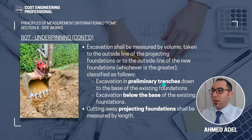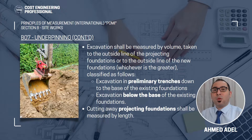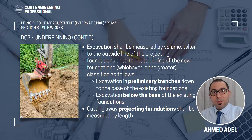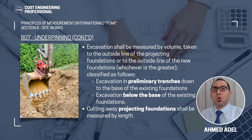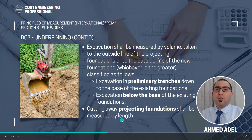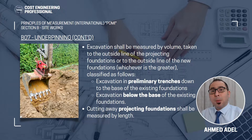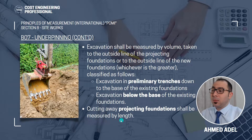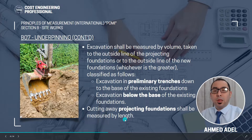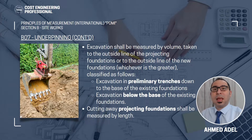Excavation in preliminary trenches down to the base of the existing foundations is the first type, and we also have excavation below the base of the existing foundations. If you want to do strengthening works or increase the size of the foundation, two excavations will be needed: the first to expose the existing foundation, and the second under the existing foundation. Cutting away projecting foundations shall be measured by length — you need to measure how many linear meters of footing will be cut.